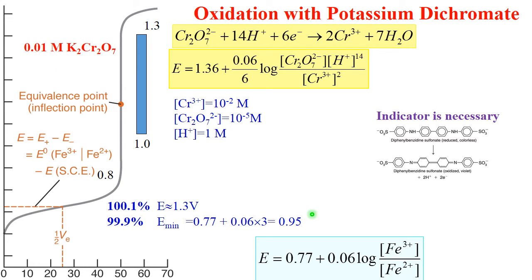One more possibility of redox titration is titration with potassium dichromate. In this case, the oxidation agent is Cr2O7^2-, which reacts with 14 H+ ions, 6 electrons, to make 2 chromium 3+ ions, and water.